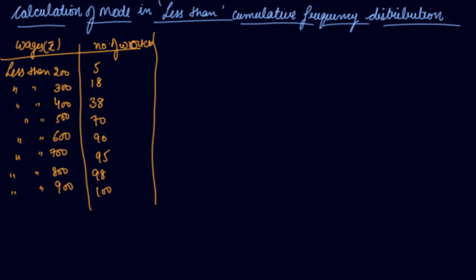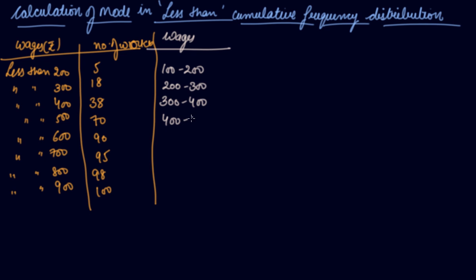So what you have to do, you first have to make the class intervals. You can see the gap — 200, 300 — 100 gaps. That will make class intervals like this: 100 to 200, 200 to 300, 300 to 400, 400 to 500, 500 to 600, 600 to 700, 700 to 800, 800 to 900.